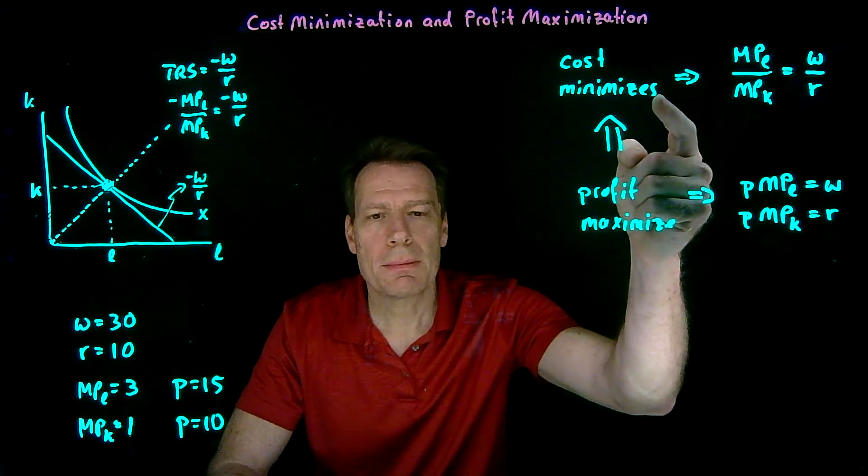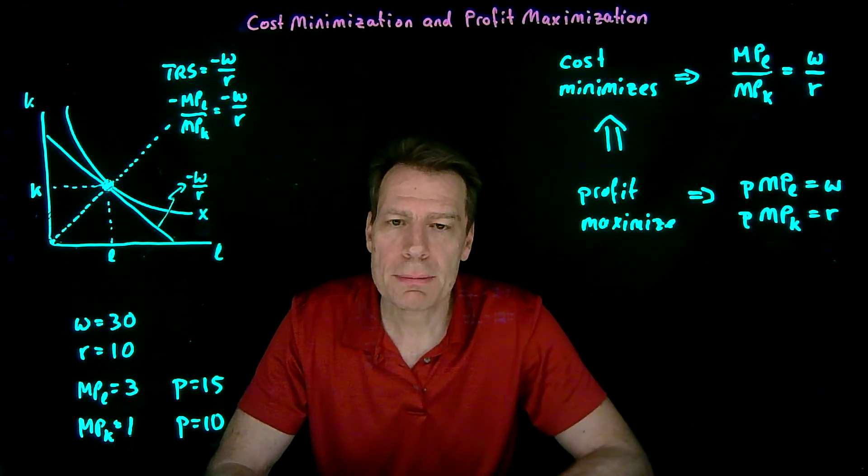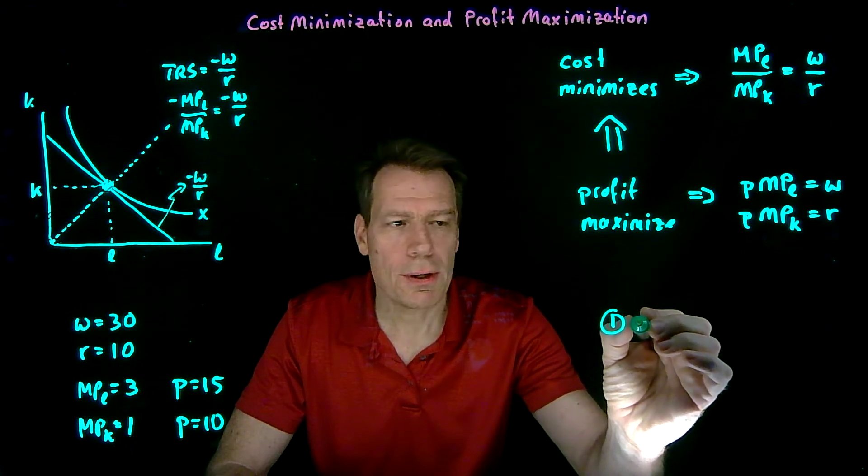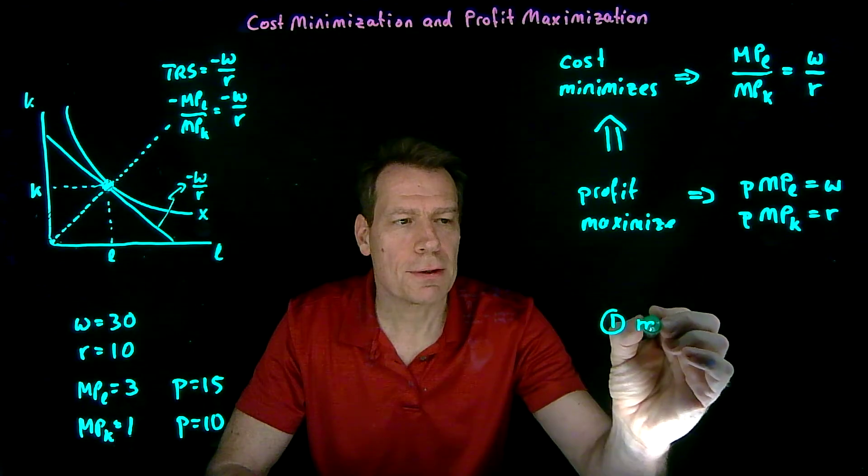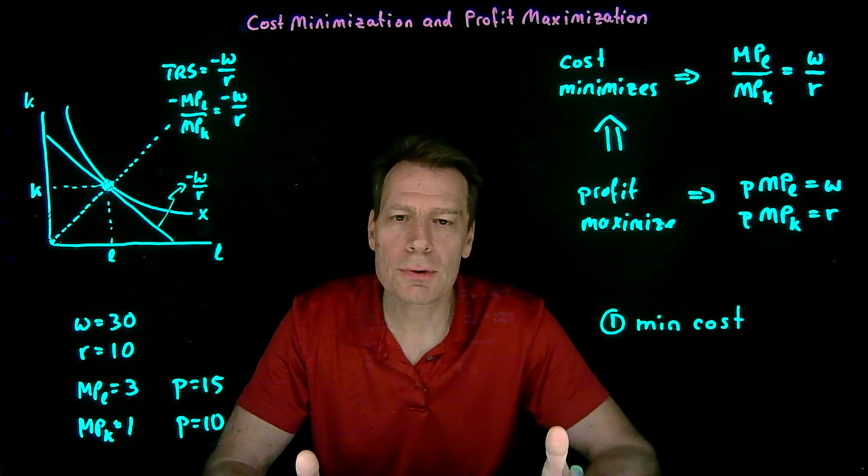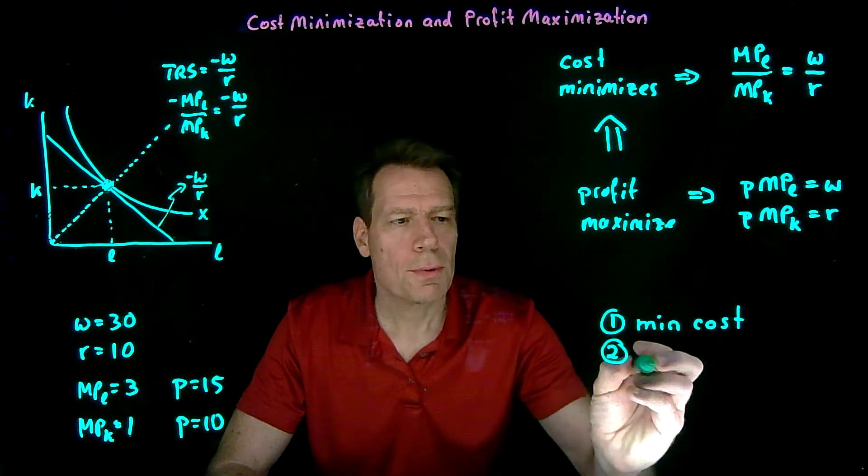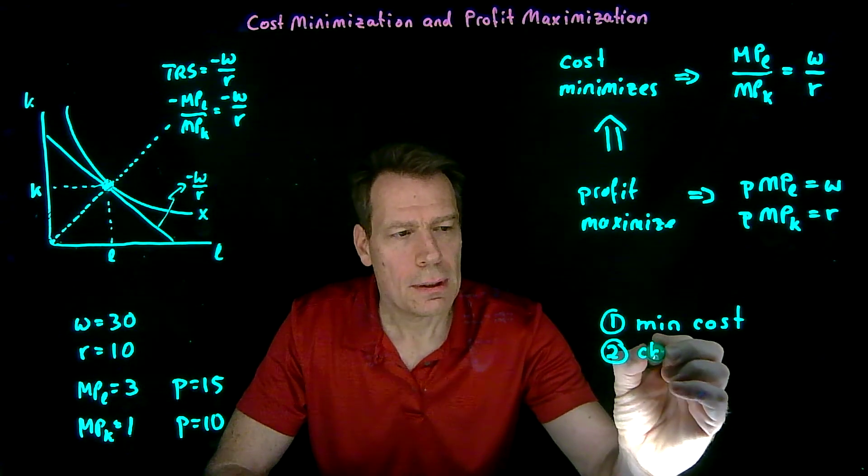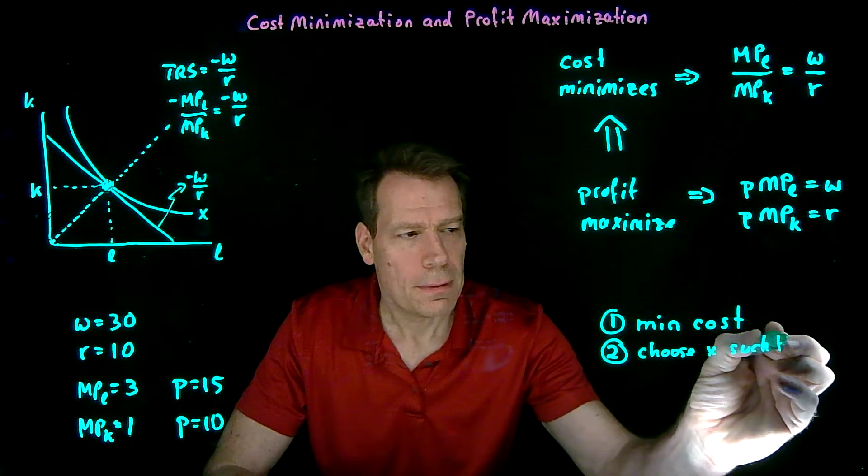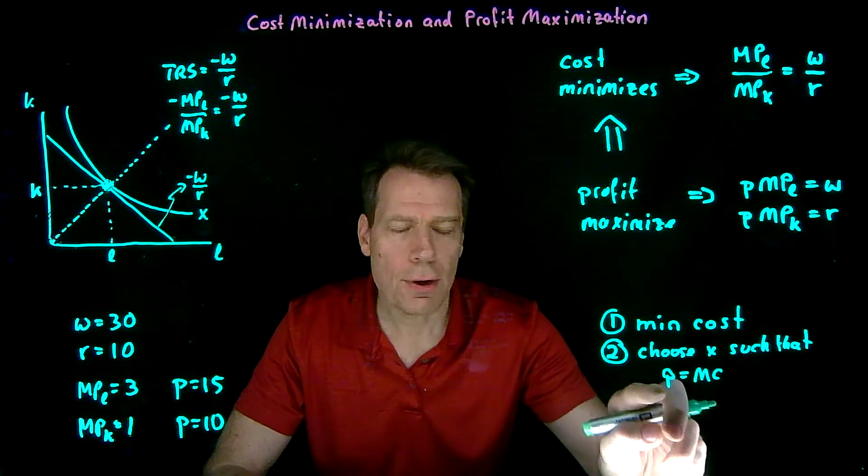And once we include thinking about price, we can move from cost minimization to profit maximization. We, in fact, did this in the two-step profit maximization method. The first step in that method was to minimize cost, to figure out the cost function, figure out what it costs to produce all different levels of output. And the second step in the two-step profit maximization was to choose an output level such that price is equal to marginal cost as long as price is above or at least equal to the break-even price.